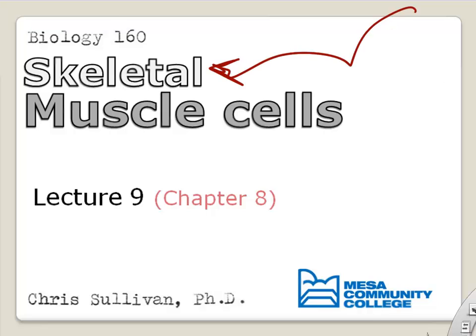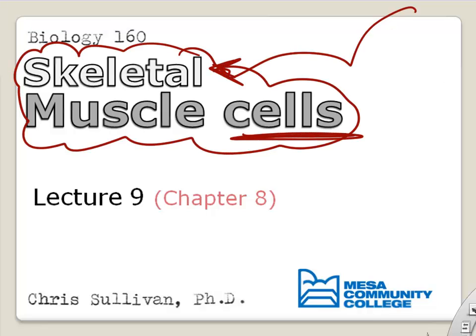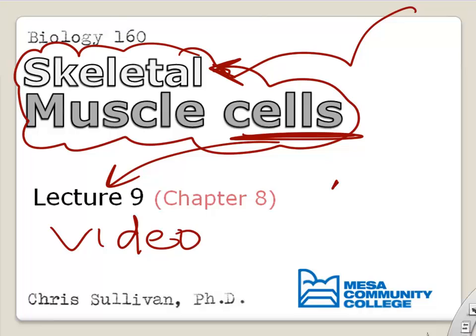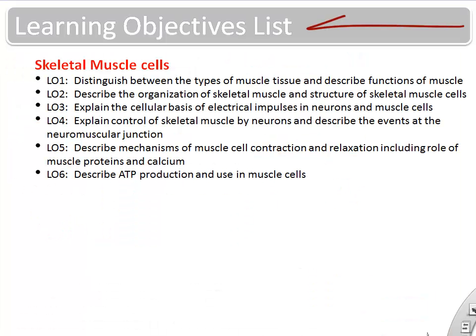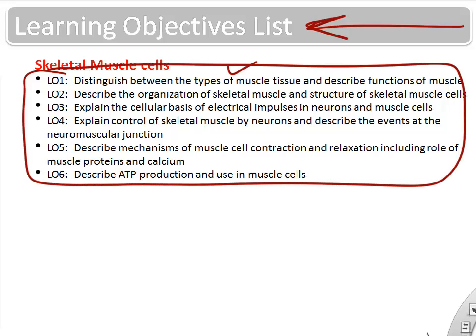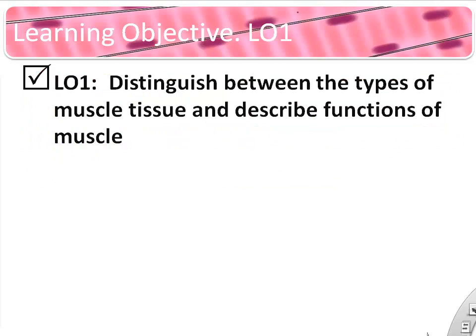This is Lecture 9. We're going to cover skeletal muscle cells. The learning objectives cover everything from the organization of muscle to electrical impulses to muscle contraction, as well as ATP production.